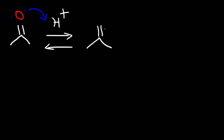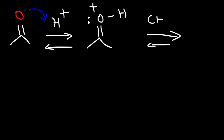Now let's go over the mechanism for the formation of an acetal group. Because the reaction occurs under acidic conditions, the first step is protonation. Once we add the hydrogen to the oxygen atom, this group becomes more electrophilic — more susceptible to nucleophilic attack by the methanol molecule. The oxygen atom of methanol is attracted to the partially positive carbonyl carbon, and so the methanol attacks there.